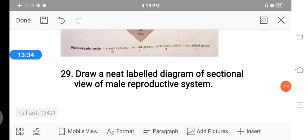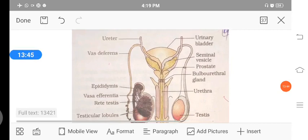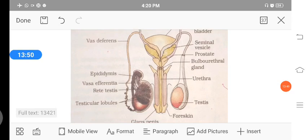Then one more diagram oriented question is, draw a neat labeled diagram of sectional view of male reproductive system. The diagram is this. In this diagram you are going to label at least 10 labelings, then only you are going to get the five marks. Next.